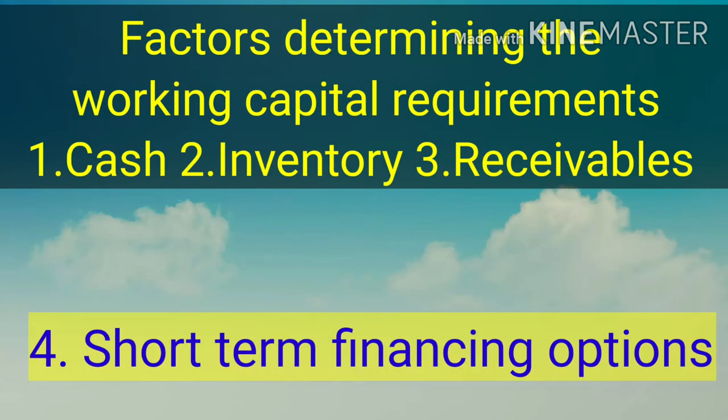Fourth is the short-term financing option. The best option for financing current assets is credit from suppliers, but normally it will not be sufficient. Then we need to borrow from a bank or resort to techniques like factoring for immediately converting debtors to cash to finance our working capital.